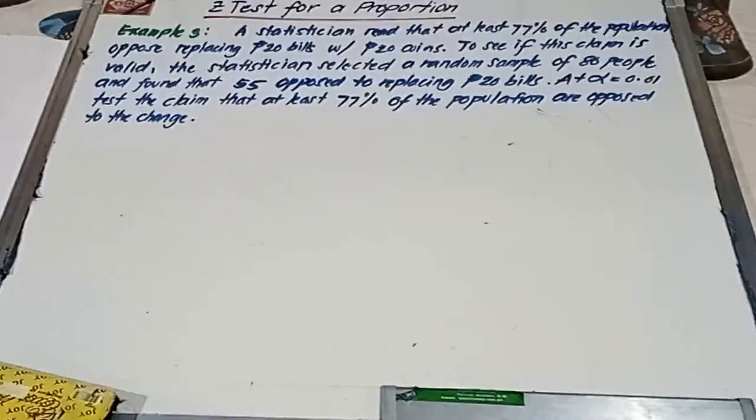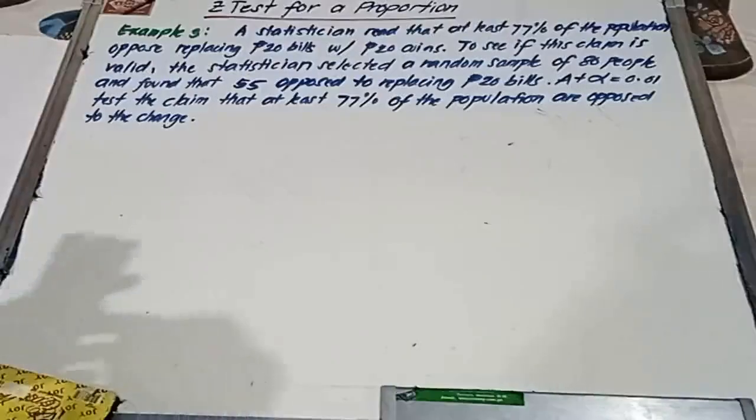We're going to test if the claim that at least 77% of the population are opposed to the change is valid at alpha value of 0.01. We're going to follow the five steps in testing the hypothesis.